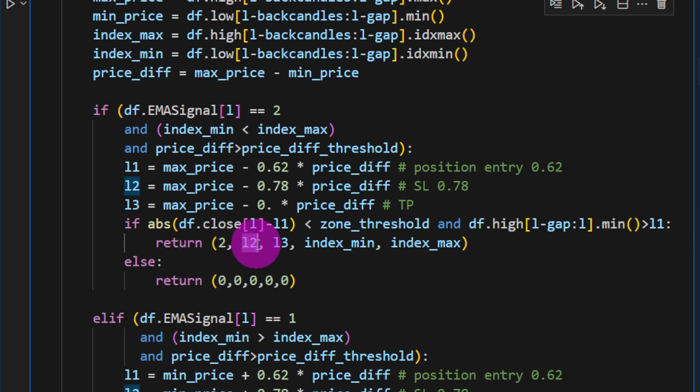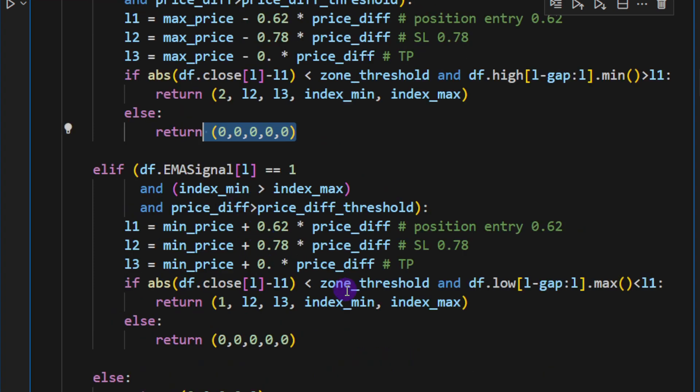When all these conditions are met, we return the signal (the category), L2 and L3 for the take profit and stop loss, and the index of the minimum and maximum in case we want to plot our signals later. All this information can be used later to either plot our signals and verify results or even use this function as a signal for the trading backtest.